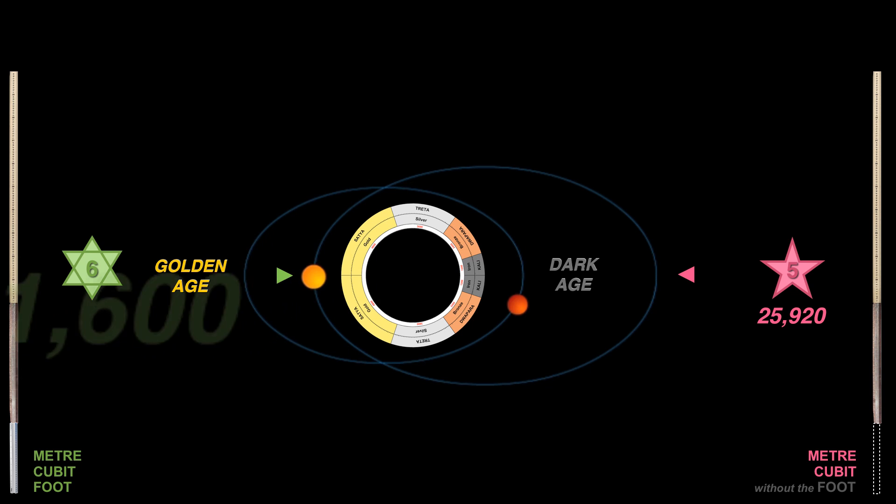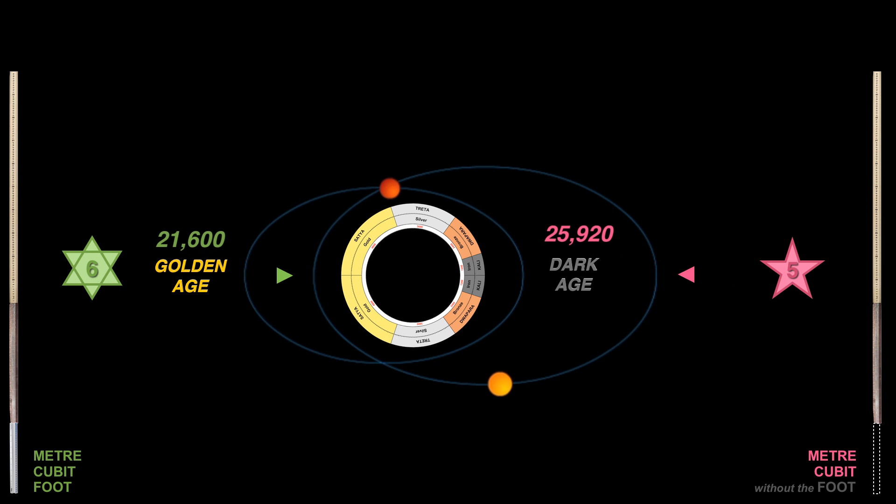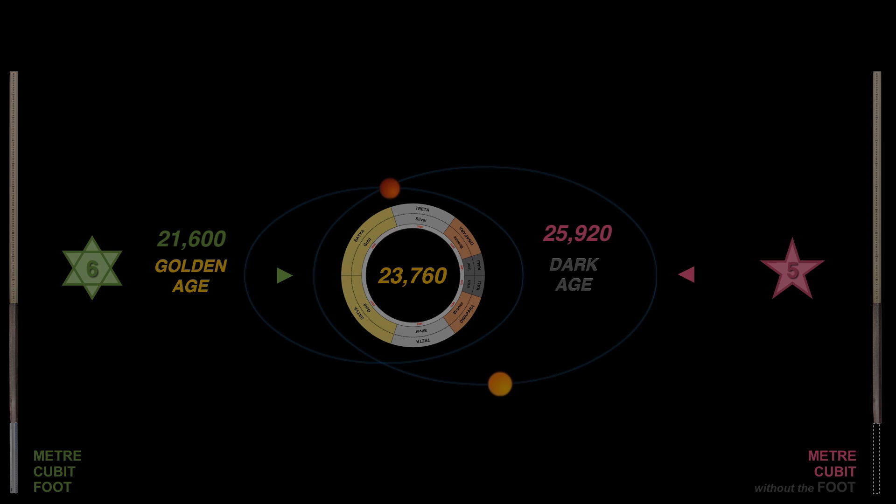The average of these two extremes then would be 23,760 years. There may indeed be a connection between the ancient Vedic assessment of a 24,000 year precession cycle and the newly discovered 6-5 ratio in the universal constant of measure hidden within the Great Pyramid.